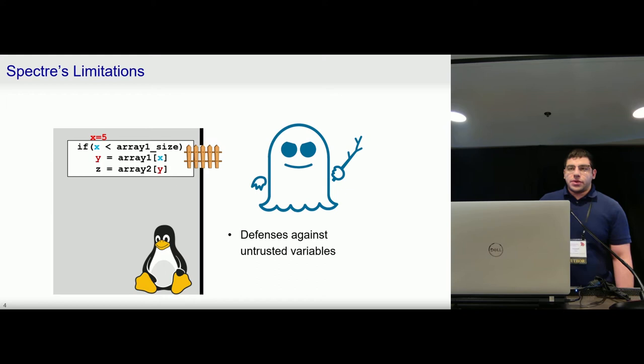The reason why this is a limitation is that it allows for defenses that target this particular behavior as taint tracking defenses can look for cases where X is coming from an untrusted source and prevent speculation from occurring on this code, for example, by adding L fences and serializing the code.